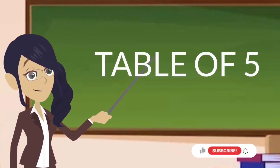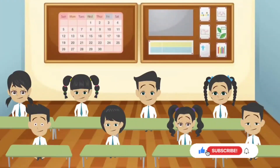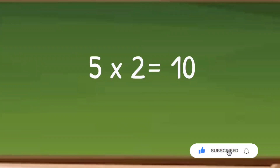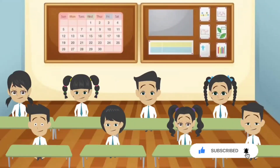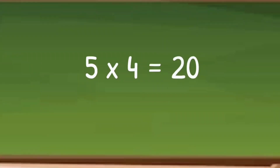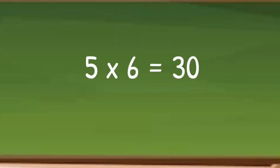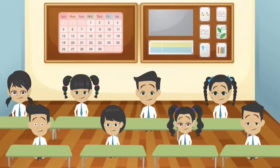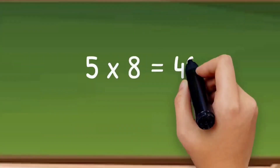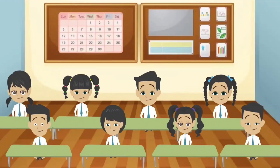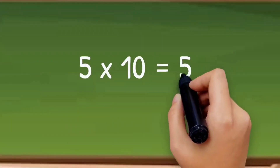Let's start table of 5. 5 ones are 5. 5 twos are 10. 5 threes are 15. 5 fours are 20. 5 fives are 25. 5 sixes are 30. 5 sevens are 35. 5 eights are 40. 5 nines are 45. 5 tens are 50.